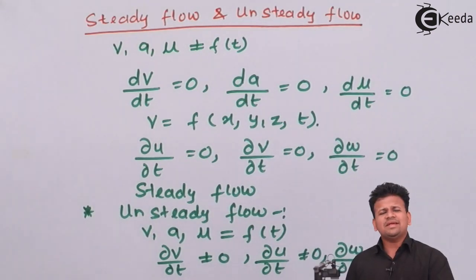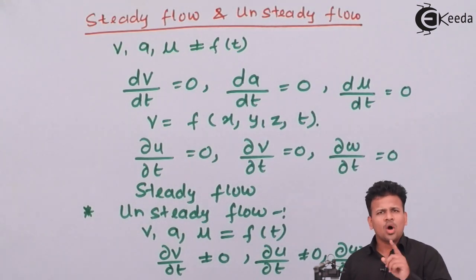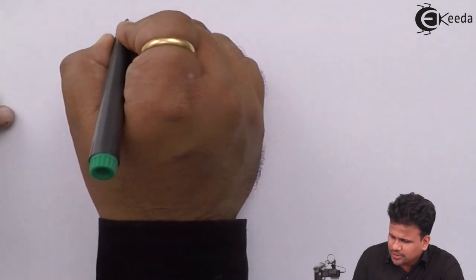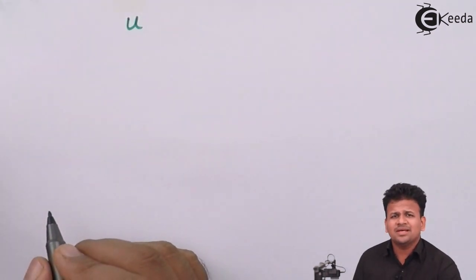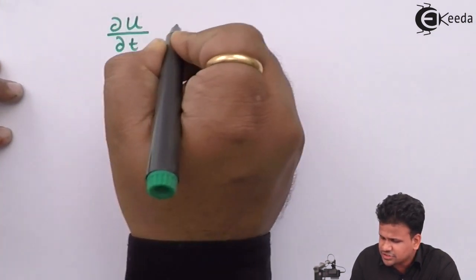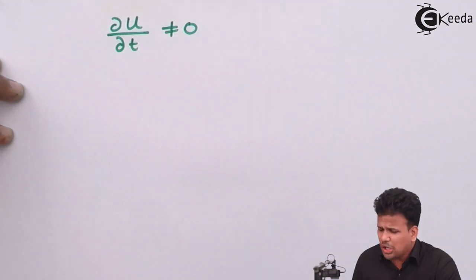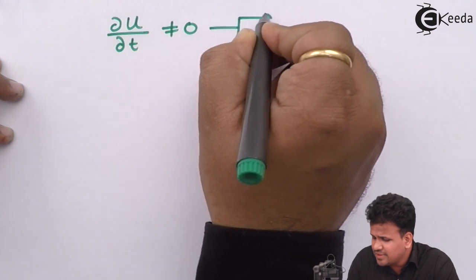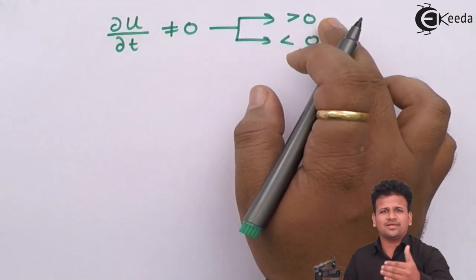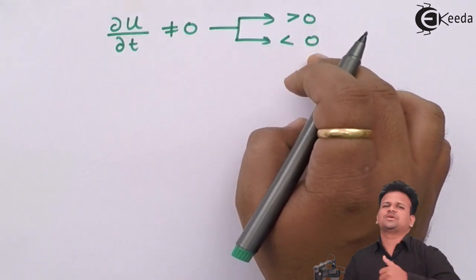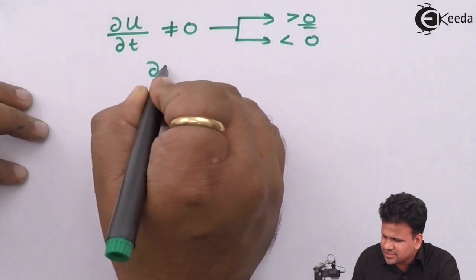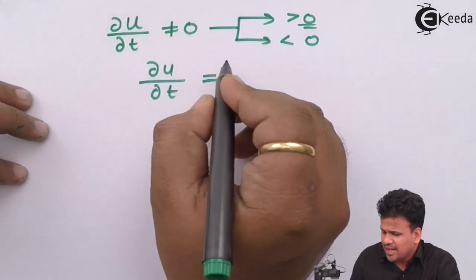Now during this entire part, we can write this in terms of differentials. Let us check out one differential for unsteady flow. We will consider the u component of velocity — that is, velocity along the x direction. The change in velocity along the x direction is not equal to zero; either this will be greater than zero or less than zero. If it is greater than zero, the velocity along that direction is increasing; if it is less than zero, the velocity is decreasing. So we write ∂u/∂t ≠ 0.